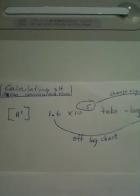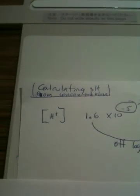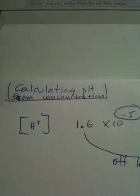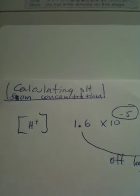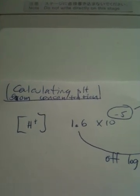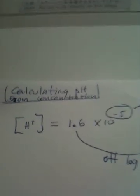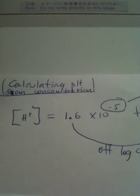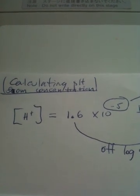In this case, we're going to be given the concentration of the hydrogen ion equal to 1.6 times 10 to the minus 5. And now we want to convert that to a pH, and to do that, we have to get the log of that number.